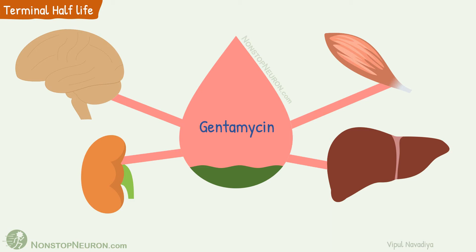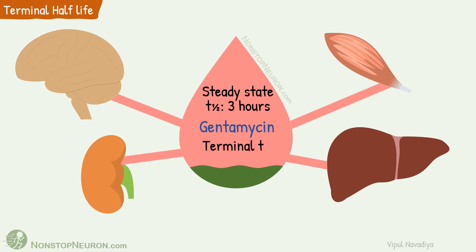Gentamicin is one such example which shows a marked difference in steady-state plasma half-life and terminal half-life. At steady-state or after a single dose, its half-life is about 3 hours. With prolonged use, it accumulates in the kidney and shows a terminal half-life of about 50 hours due to slow release from the kidneys.